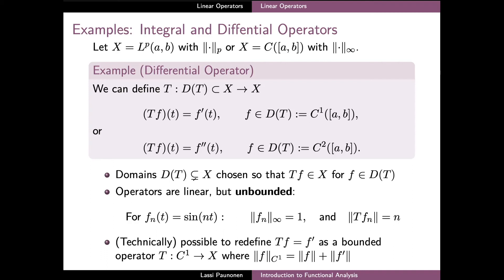In choosing the domain of an operator, one good rule of thumb is to try to make the domain D(T) as large as possible so that the images Tf still belong to our intended space. In our case, if the space x is the space of continuous functions, our domains are indeed perfectly suitable since C1 and C2 are the largest subspaces of the space x such that the function Tf still belongs to x.